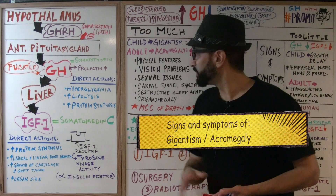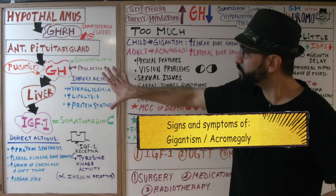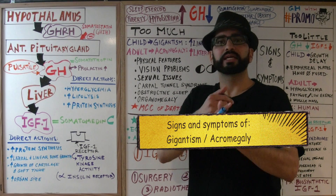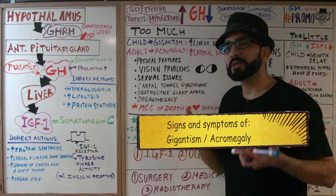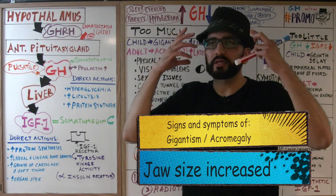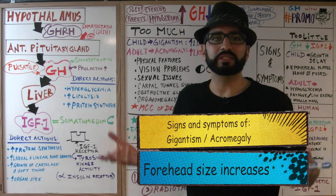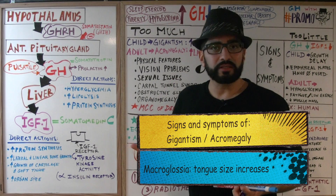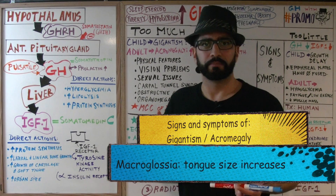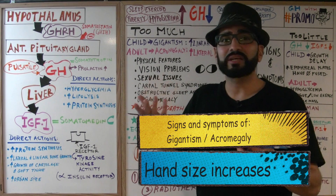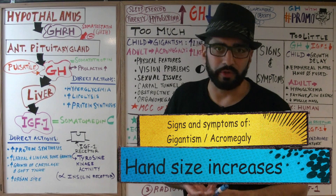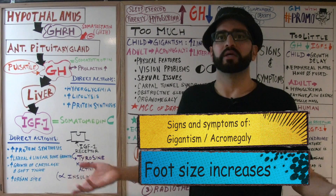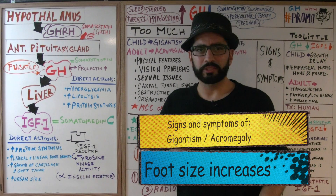The signs and symptoms of gigantism or acromegaly include characteristic physical features. Since IGF-1 is also elevated, there's increased cartilage and soft tissue size. The patient presents with a prominent jaw, an enlarged forehead — they'll say their hat no longer fits — macroglossia (big tongue), and a very deep voice. Hand size increases, so rings no longer fit. Foot size increases — a patient who used to wear a size 10 shoe now wears size 12.